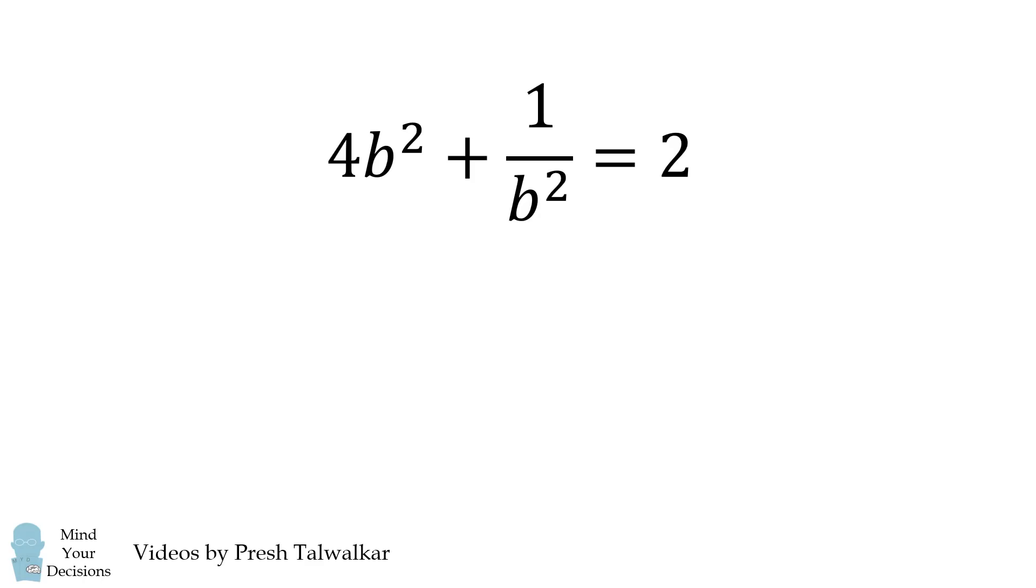If 4b squared plus 1 over b squared is equal to 2, then what is the value of 8b cubed plus 1 over b cubed? You're not allowed to use calculators and you have to solve this in 90 seconds.